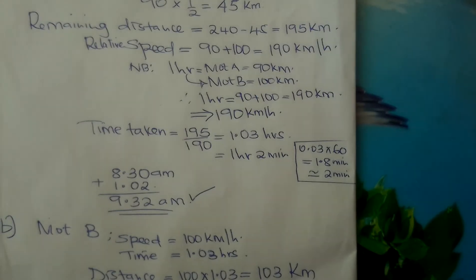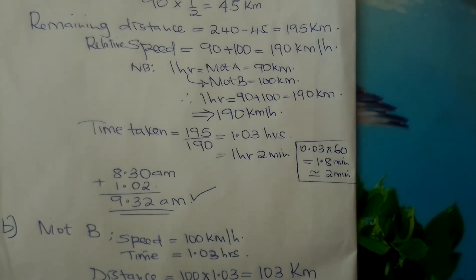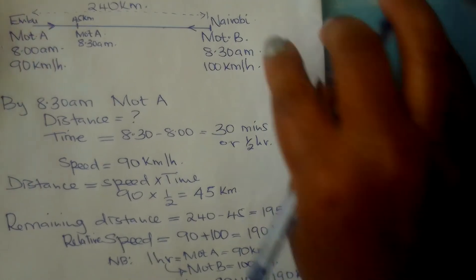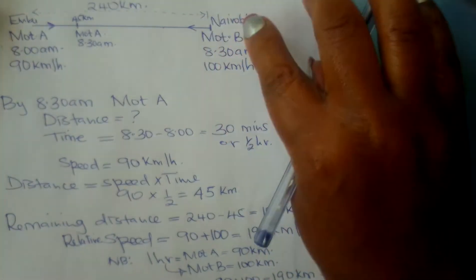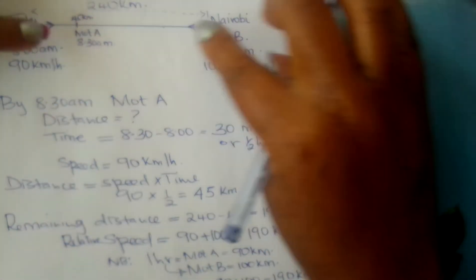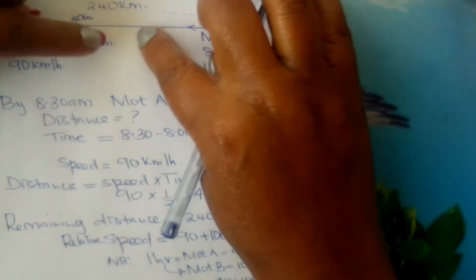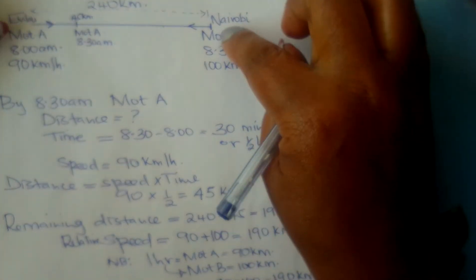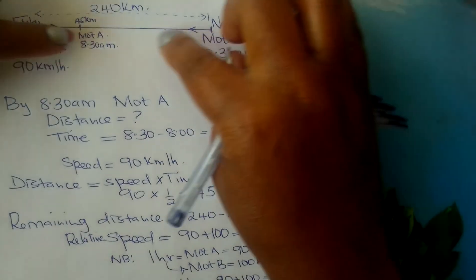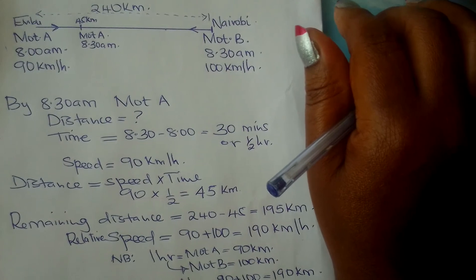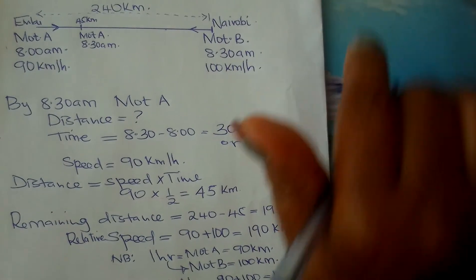Go and do practice. Whenever any two vehicles or motorists are moving towards each other, to get the relative speed you normally add their individual speeds. Go and practice.